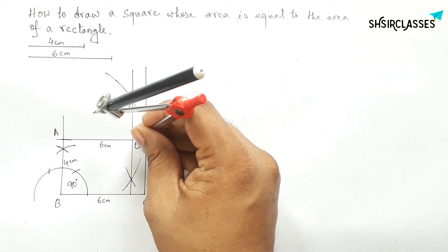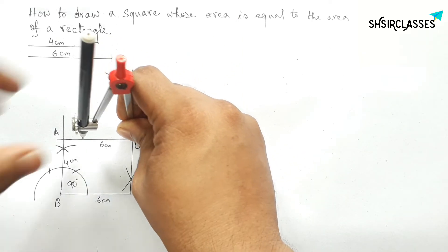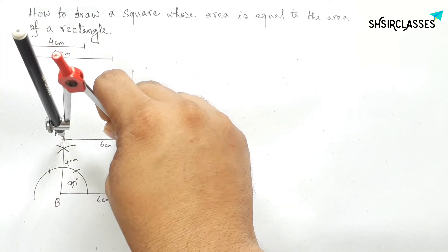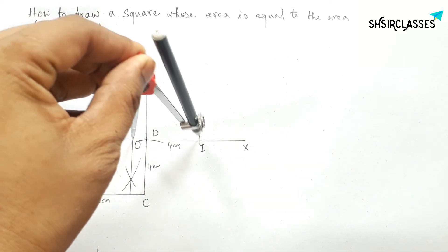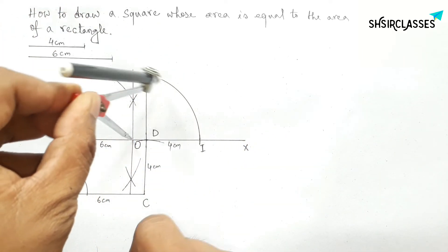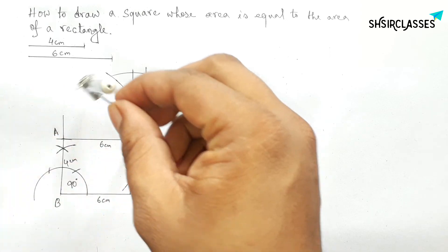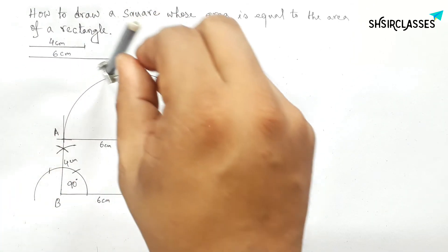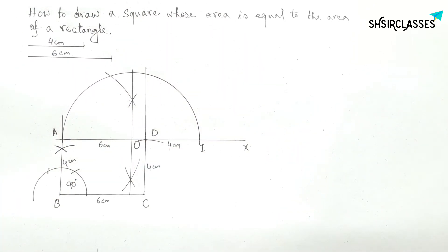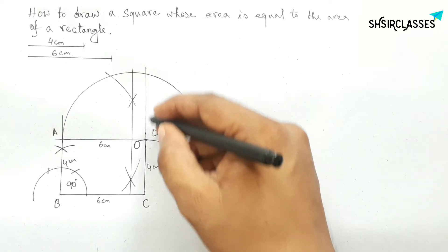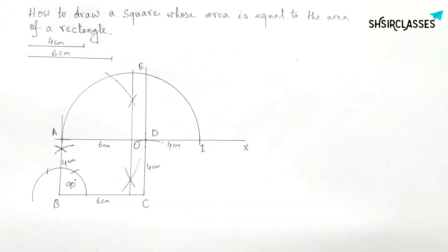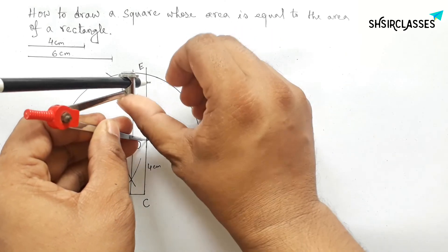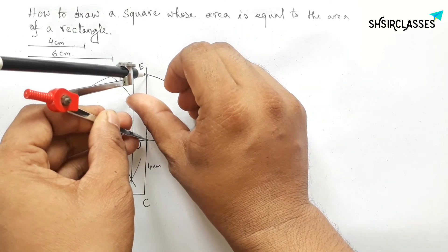Next, putting the compass on point O and taking the length OA (equal to OI), drawing a semicircle with center O from point A to point I. This is a perfect semicircle, and it meets the perpendicular at point B — taking this intersection point as E.